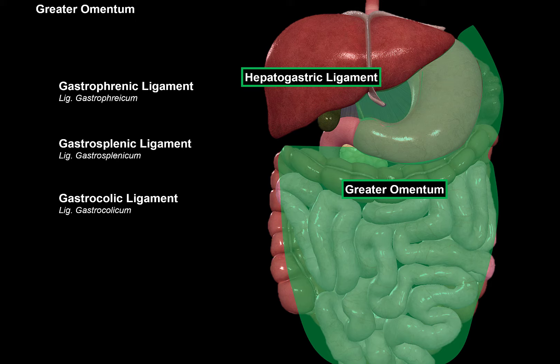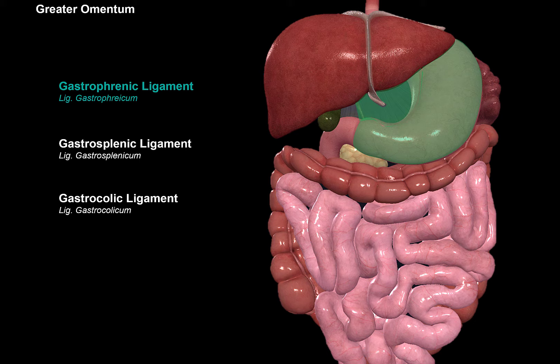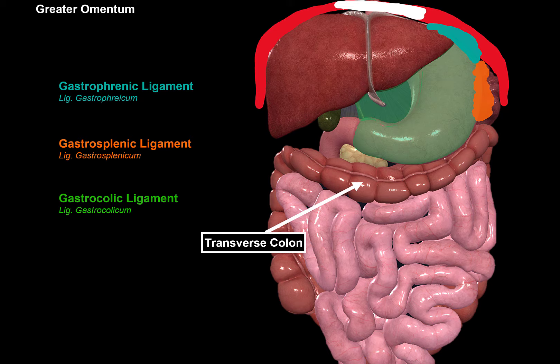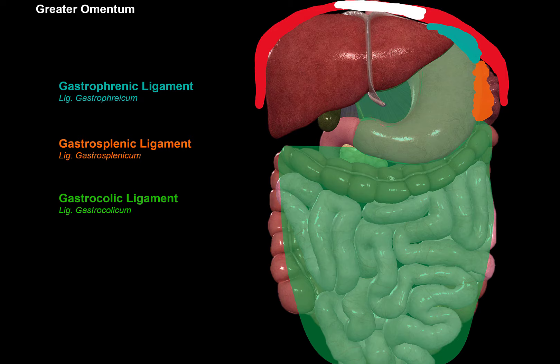The first ligament of the greater omentum is the gastrophrenic ligament — phrenic relates to the diaphragm, so this goes from the stomach to the diaphragm. Then we have the gastrosplenic ligament, going from the stomach to the spleen. Then there's the gastrocolic ligament, connecting the stomach to the transverse colon, but it doesn't go there directly. Let's use a different model to show how it does that.